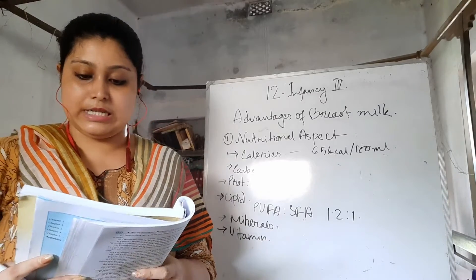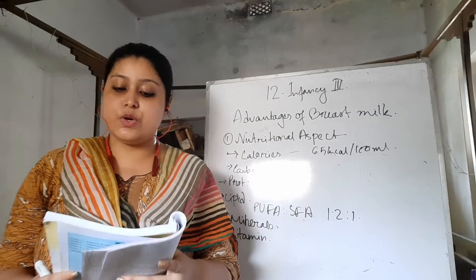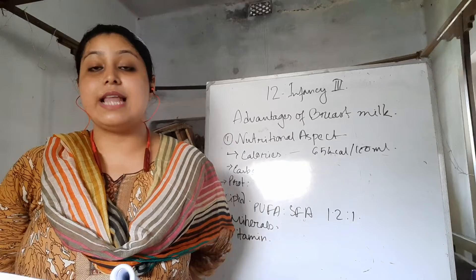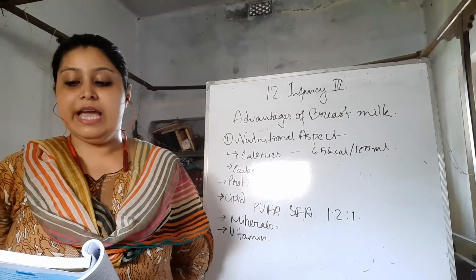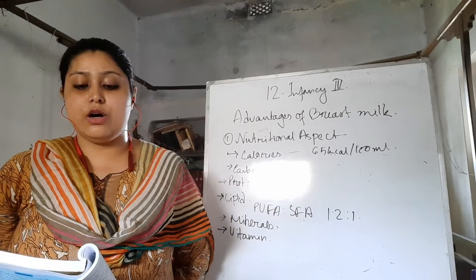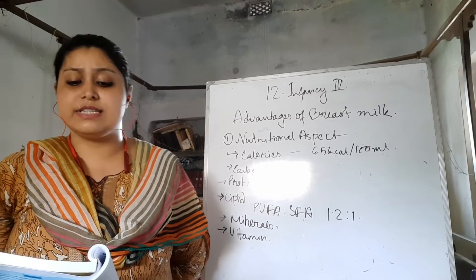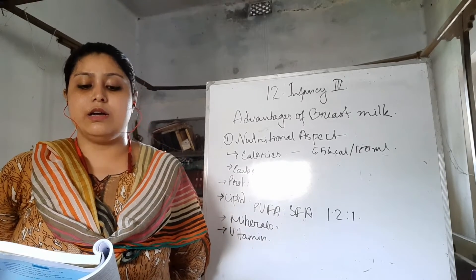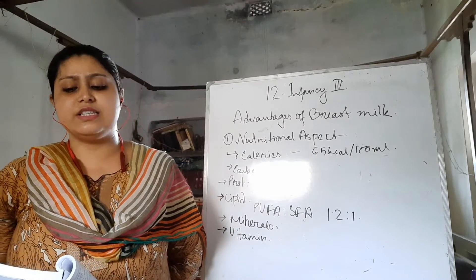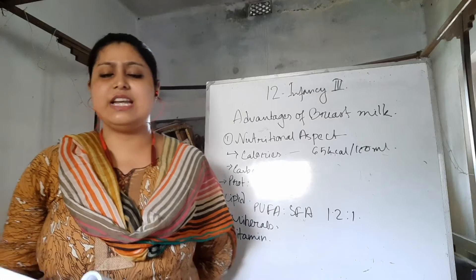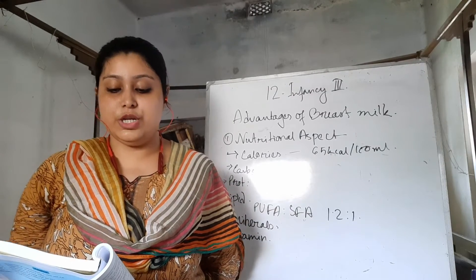Next, the endocrinal factors. Breast milk is a rich source of hormones like TSH, thyroxine, PTH, corticoids, steroids like calcitonin, oxytocin, insulin, and prolactin — many hormones that are all needed for children.